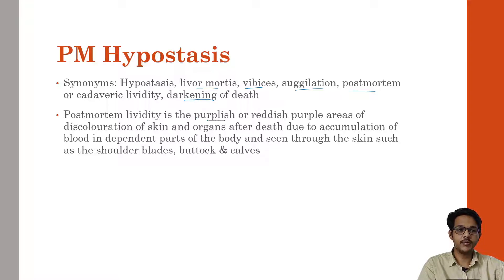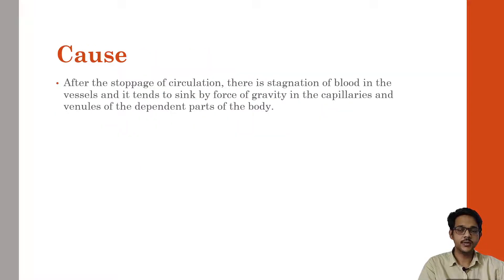Post-mortem lividity is the purplish or reddish-purple areas of discoloration of skin and organs after death, due to accumulation of blood in dependent parts of the body, seen through skin such as shoulder blades, buttocks and calves. It is caused mainly because after cessation of circulation, there is stagnation of blood in the vessels and it tends to sink by the force of gravity in the capillaries and venules of the dependent parts of the body. As the circulation stops, blood starts accumulating in the capillaries, leading to discoloration in the skin, mainly in the dependent parts.